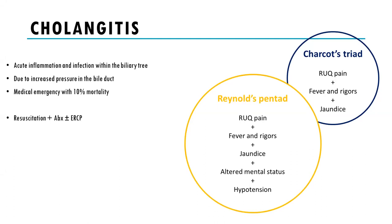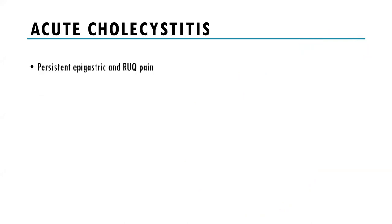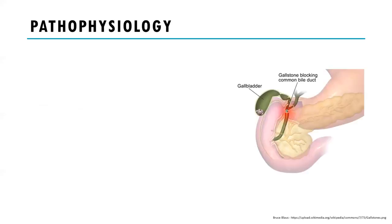Charcot's Triad and Reynold's Pentad symptoms include right upper quadrant pain with fever and rigors and jaundice, and constitutional upset with signs of septic shock. Acute cholecystitis patients, rather than having biliary colic — a waxing and waning pain that resolves spontaneously — will have persistent epigastric and right upper quadrant pain. They can be febrile with chills, nausea and vomiting, loss of appetite, due to a stone blocking the neck of the gallbladder.